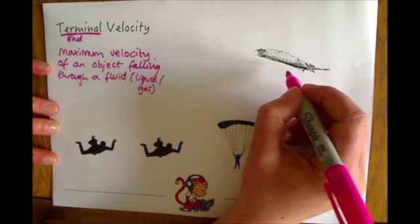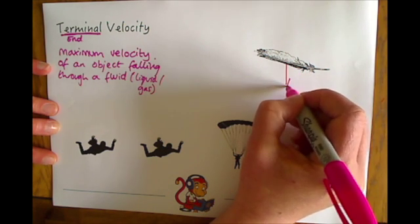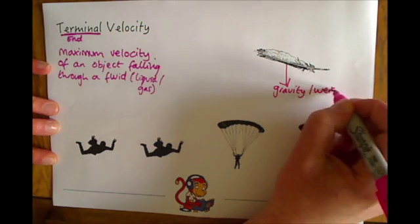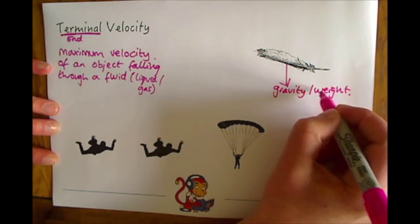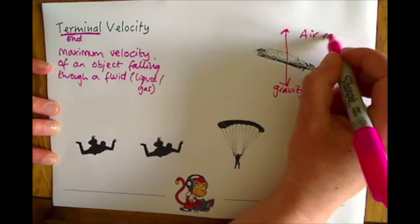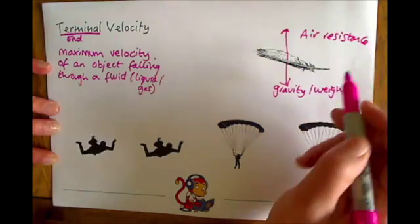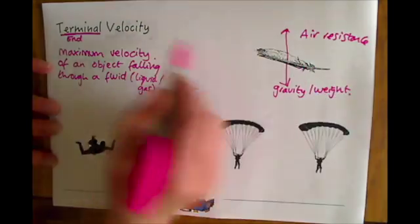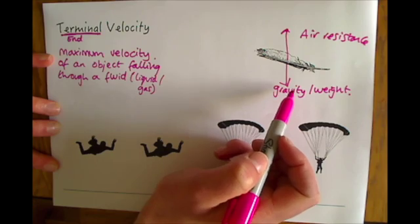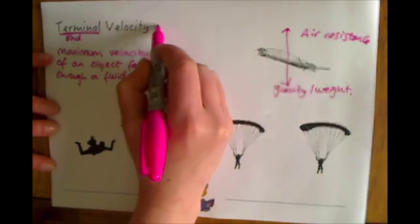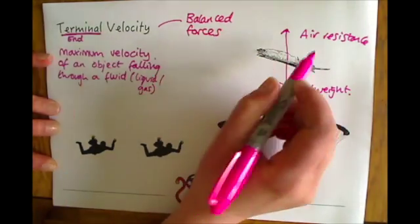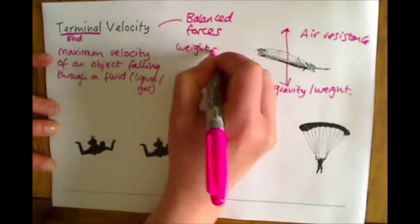If you think back to forces, the forces acting on this feather as it's falling are gravity downwards — or we can call that its weight. So weight, or gravity, is pulling the object downwards. And in the opposite direction, you will have air resistance acting as the force against the feather. At terminal velocity, when you reach that maximum speed, the air resistance and the gravity or weight pulling the object down are balanced.